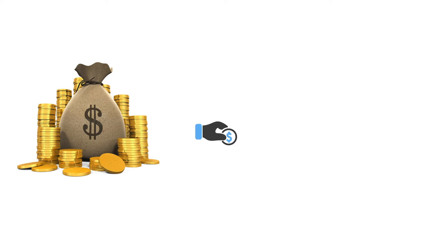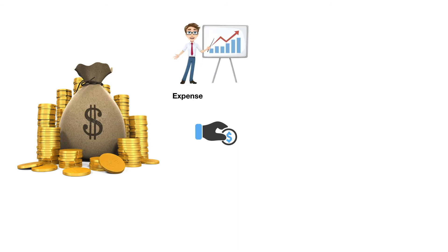Before that profit is paid out, the mutual fund manager will get a commission in the name of expense ratio. That expense ratio will range from zero to three percent — it cannot exceed more than three percent. We have to be very careful while selecting the mutual fund and ensure the expense ratio is very low, as it will enhance our return when we sell our mutual fund.